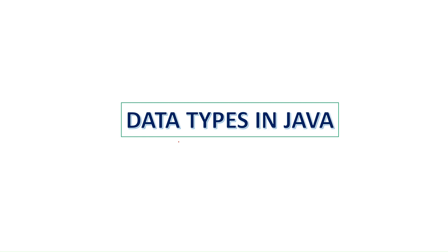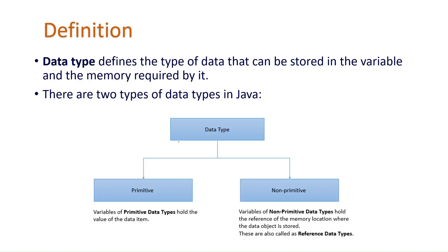Hi everyone, in today's class I will explain about data types in Java — what is a data type and what are the different data types available in Java. A data type defines the type of data that can be stored in a variable and how much memory is required for it.